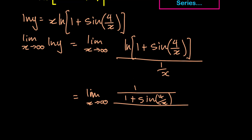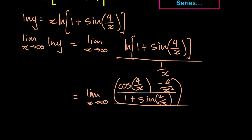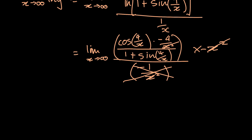We haven't finished solving the derivative of this natural log — we now need the chain rule. The derivative of one plus sine of four over x: the derivative of sine of four over x is cosine of four over x, and then the derivative of what's inside the sine gives us times negative four over x squared. That's our numerator. The derivative of our denominator is simply negative one over x squared.